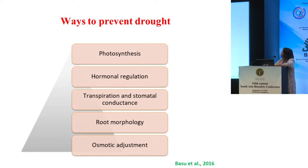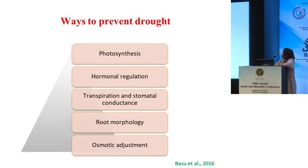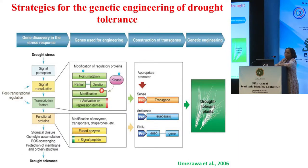Ways to provide drought tolerance include addressing genes in the photosynthetic pathway, hormonal regulation pathway, transpirational and stomatal conductance, root morphology, and osmotic adjustment. People have been looking at all these different levels at which plants can be modified or their genes could be modified to give drought tolerance. There are at least about 2,000 papers available on this, and what I'm touching is just the tip of the iceberg.